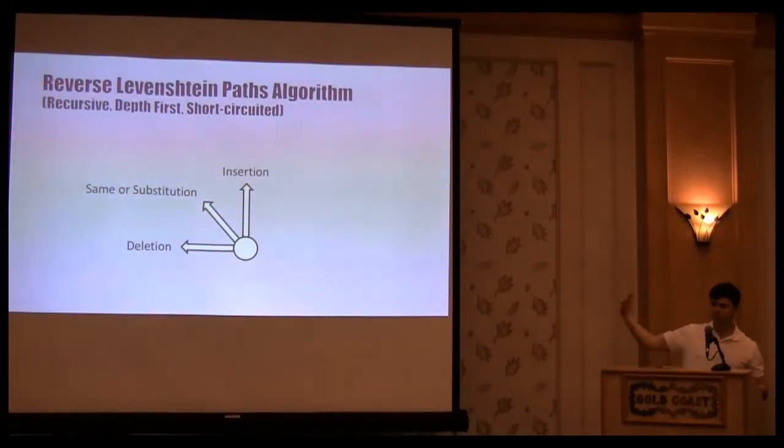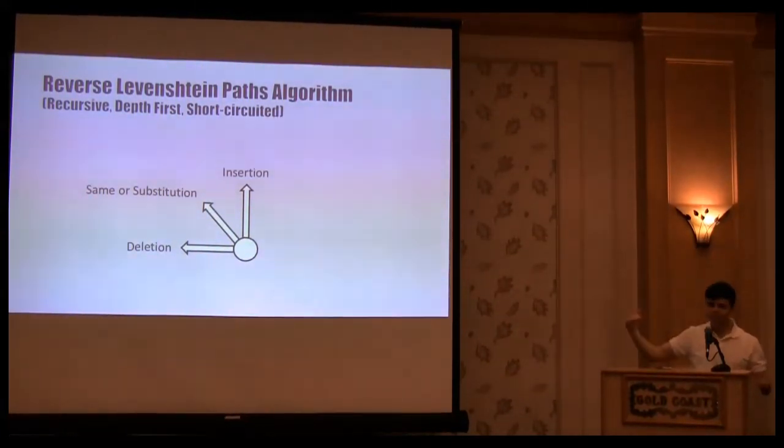You just basically whittle your way through from the bottom right corner all the way to the top left. And if you have to move up, you just have an insertion. If you have to move left, you just delete a character. If you have to move diagonally and the cost did not change, then there's no change. The two strings are equal. If there is a change, then you have simply substitution. Easy peasy.